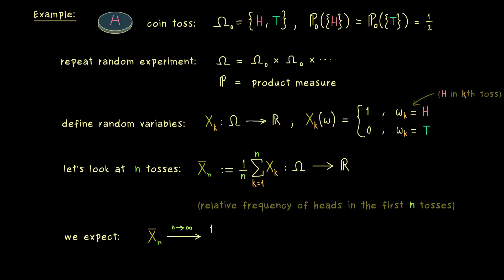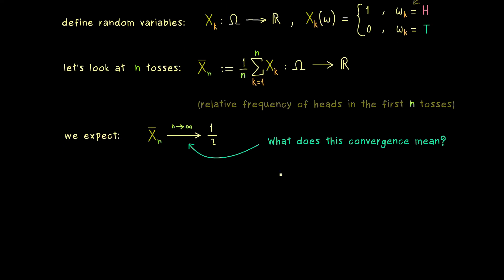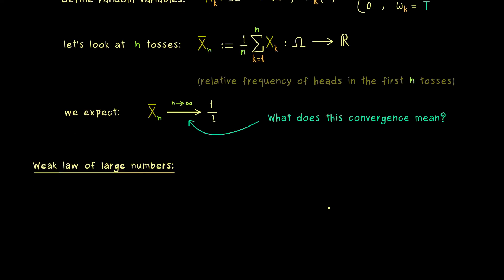We immediately get one important question: what does this convergence actually mean? What is the explicit convergence that goes in here? The weak law of large numbers gives us one possibility for this convergence. In this case, one says that the random variable converges in probability to one half. This is a special notion of convergence, which I will now explain.